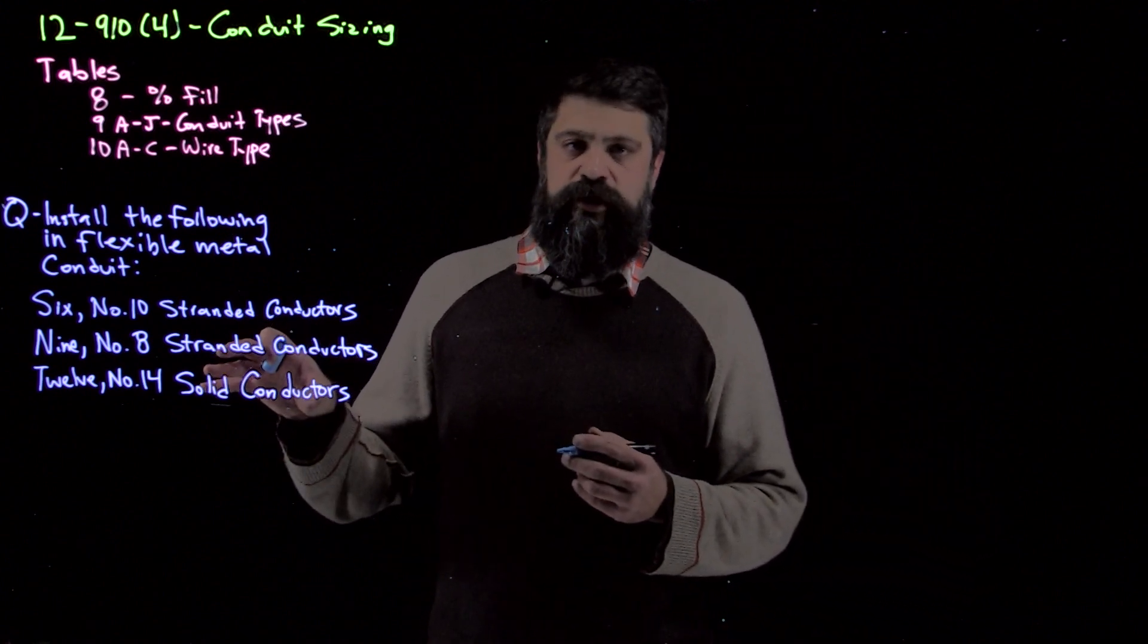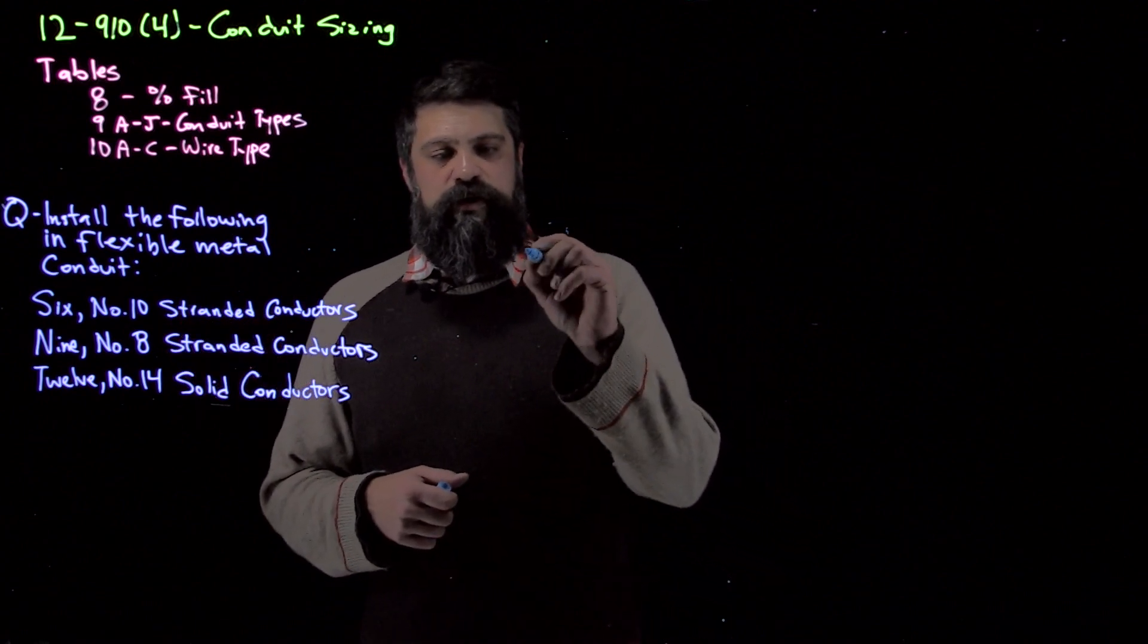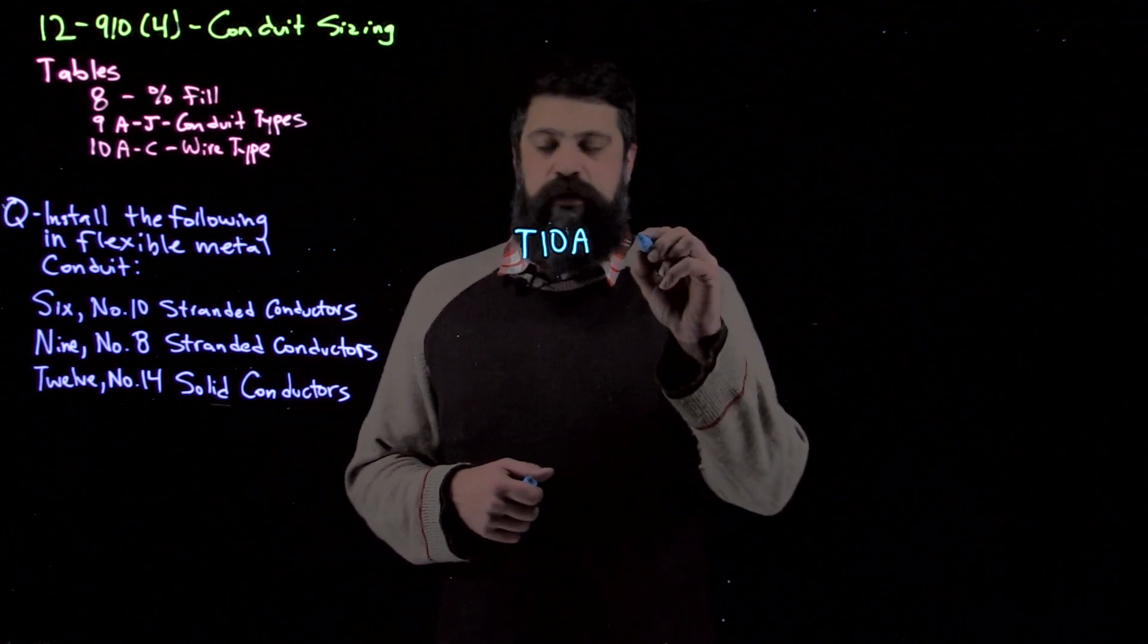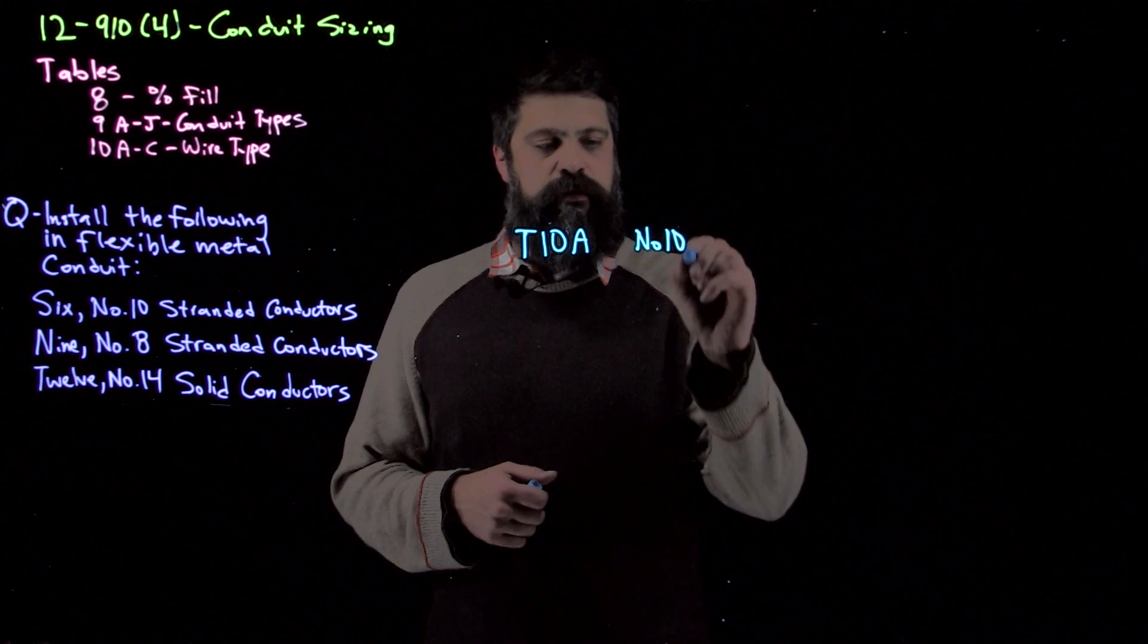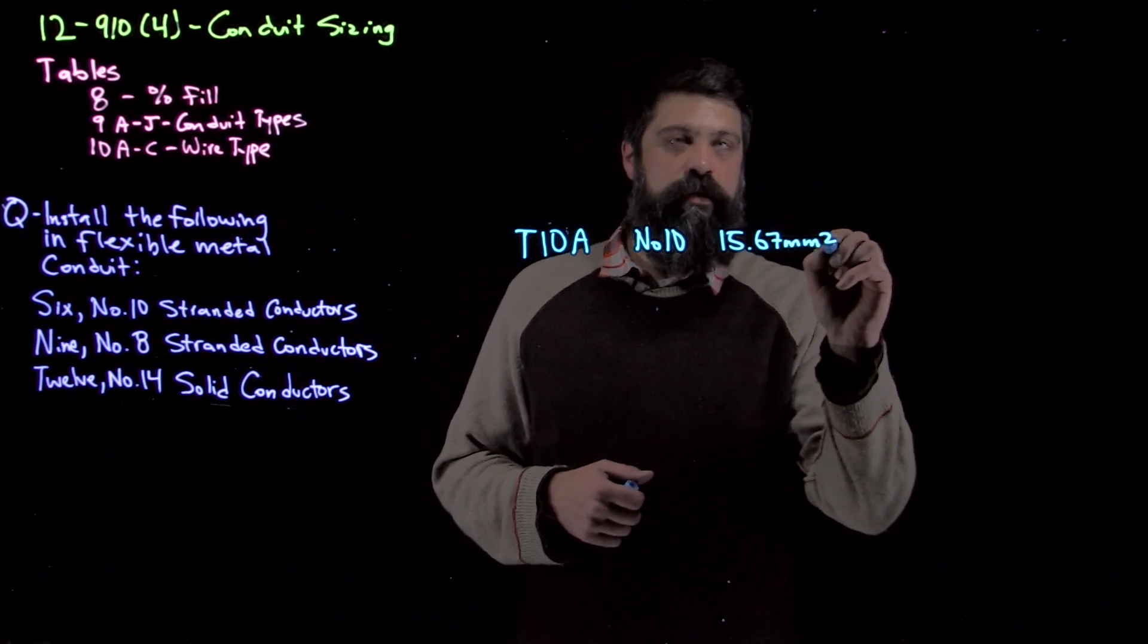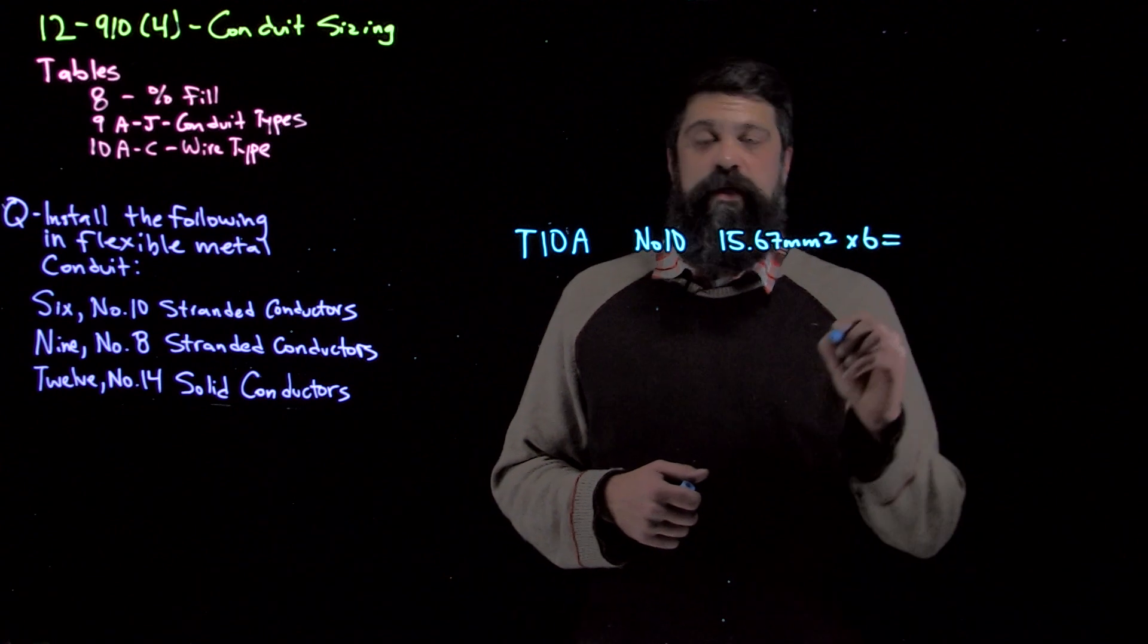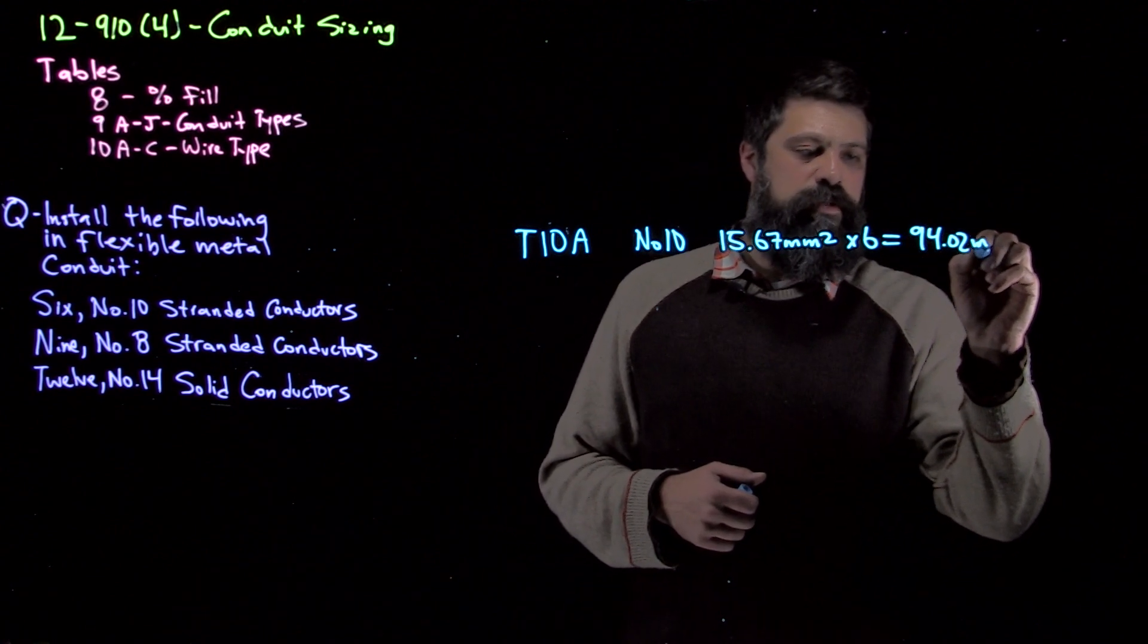So to figure out how much area these all take up, we'll start off with the number 10 stranded. So that's going to take us over to table 10A. And for a number 10 stranded conductor, I'm going to have an area of 15.67 mm². We have six of them. So when we multiply that all out, we end up with 94.02 mm².